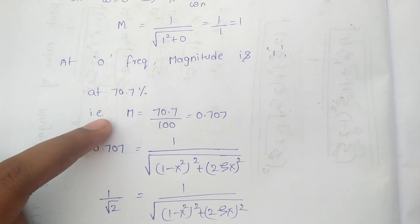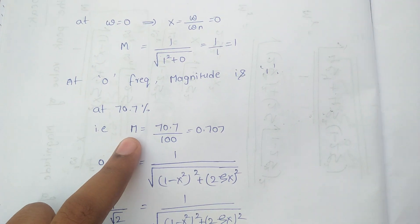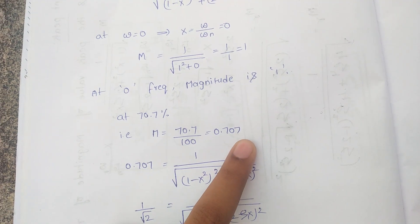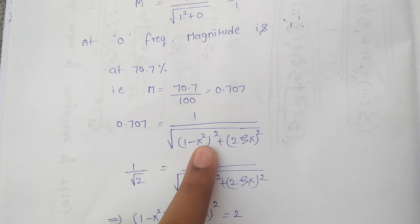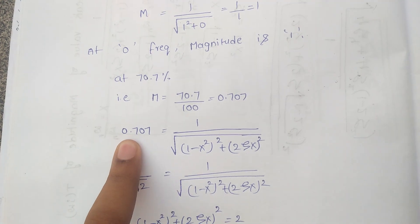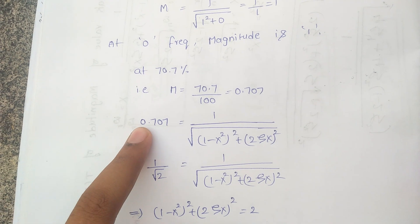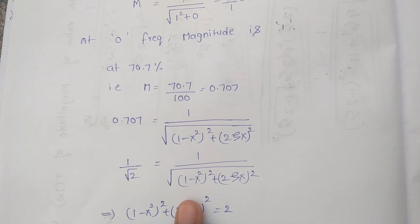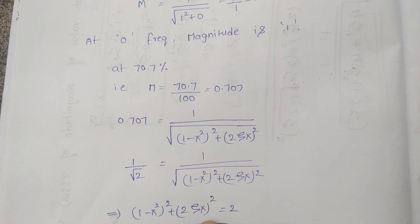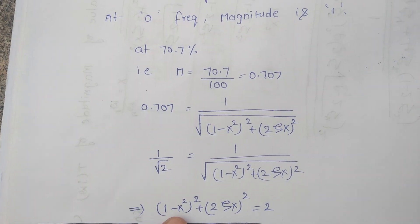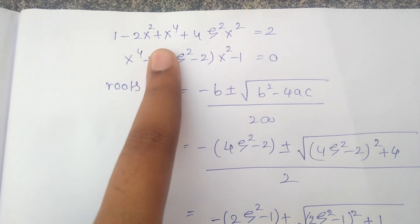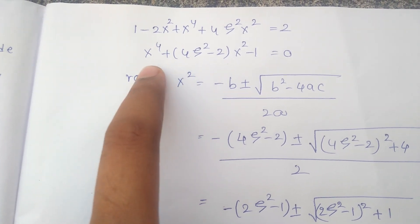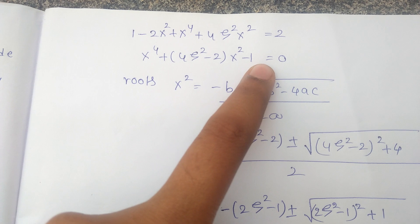The magnitude falls to 70.7%, so M = 70.7/100 = 0.707. Setting 0.707 = 1/√((1 − h²)² + (2ζh)²), and since 0.707 = 1/√2, equating gives (1 − h²)² + (2ζh)² = 2. Expanding using (a − b)² = a² − 2ab + b²: 1 − 2h² + h⁴ + 4ζ²h² = 2. Taking h² as common: h⁴ + (4ζ² − 2)h² − 1 = 0.